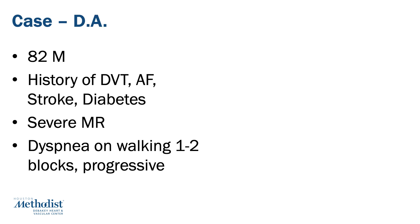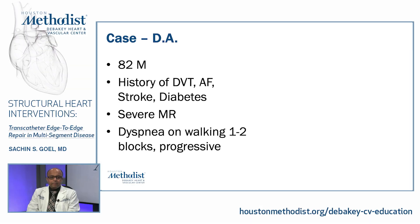We'll start with a case. The patient is an 82-year-old male with previous history of DVT, atrial fibrillation, stroke, and diabetes. Patient presented with severe mitral regurgitation and symptoms of dyspnea upon walking one to two blocks, which had been progressive for the last four to six months.